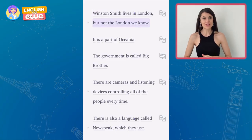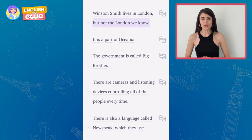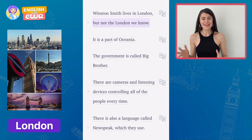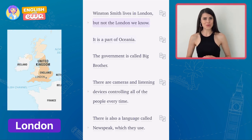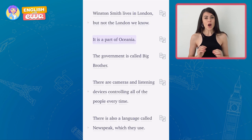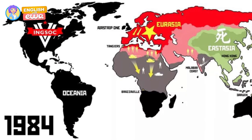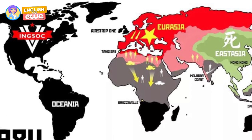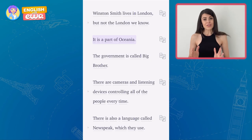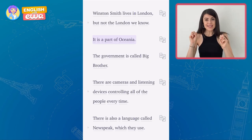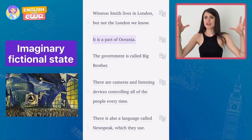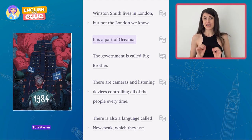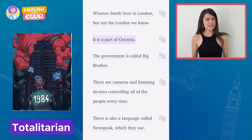Winston Smith lives in London, but not the London we know. As you know, London is the capital of England in the UK. That's not the London we're talking about here. It's a part of Oceania — Oceania being the islands of the western, southern, and central Pacific. However, in this context, this is the setting of the book. This is a completely imaginary, fictional state that is totalitarian, which means a dictatorship.